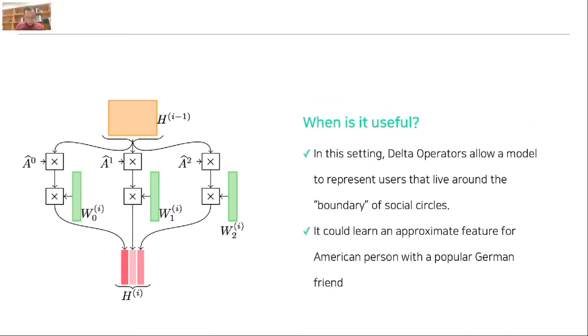When is it useful? I gave you a simple example. They indicate that the delta operator allows a model to represent users that live around the boundary of social circles. For example, an American person has some American friends, and A has a German friend.